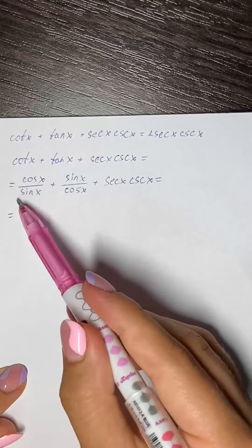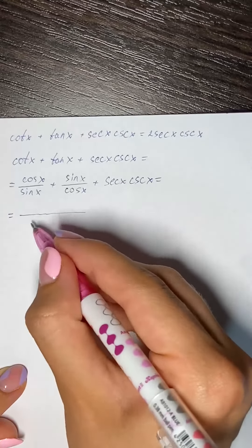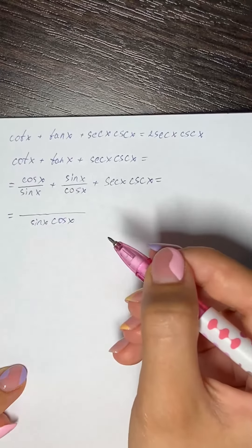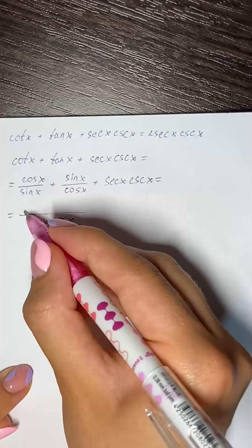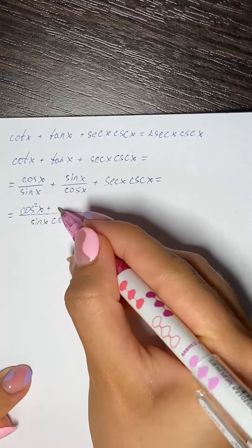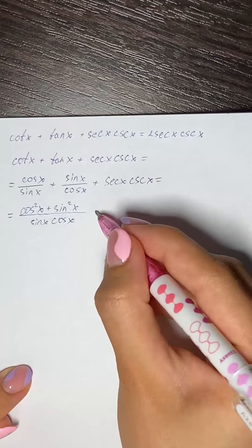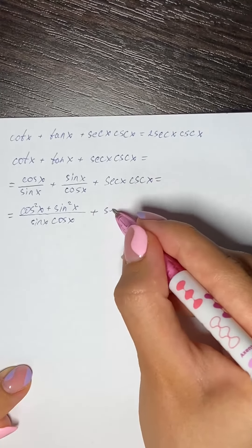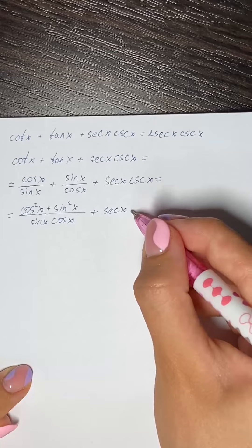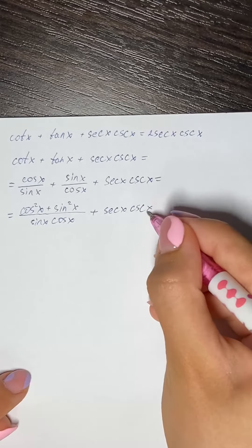So we're going to make a common denominator, that's sine of x times cosine of x. And in the numerator we have cosine squared of x plus sine squared of x, plus secant of x times cosecant of x.